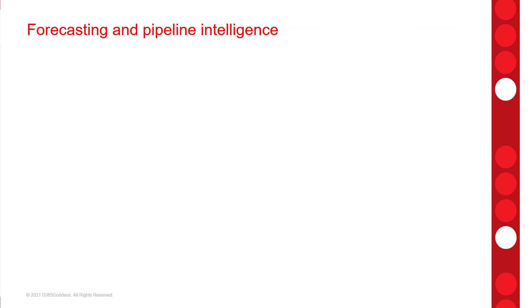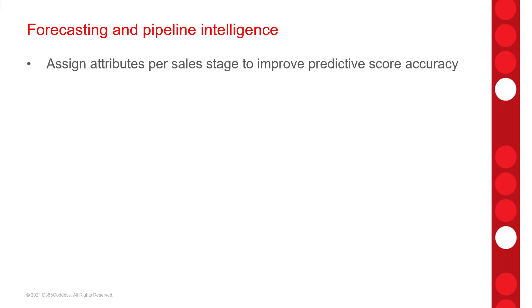We also have forecasting and pipeline intelligence — a list of features related to forecasting and lead and opportunity scoring in Dynamics 365, giving users better insights into their pipeline. Unfortunately, most of these features were not part of the early access features, so I wasn't able to try them out. The first one allows us to assign sales stages to attributes, fields, or columns in the scoring models for opportunity or lead scoring. Microsoft will also allow users to view how these fields impact the scoring model at each sales stage.